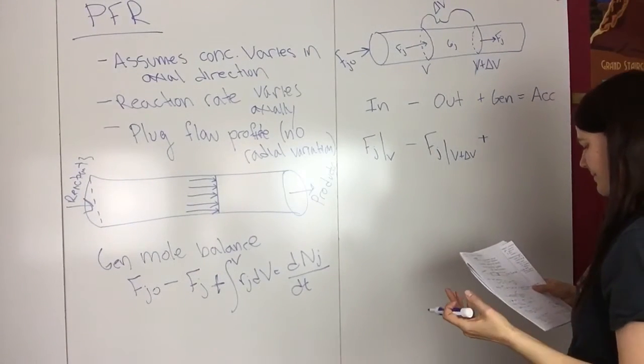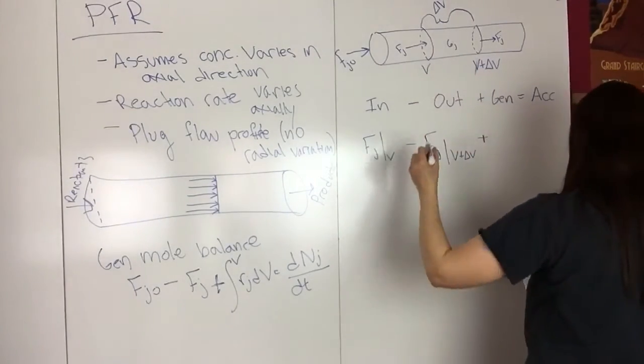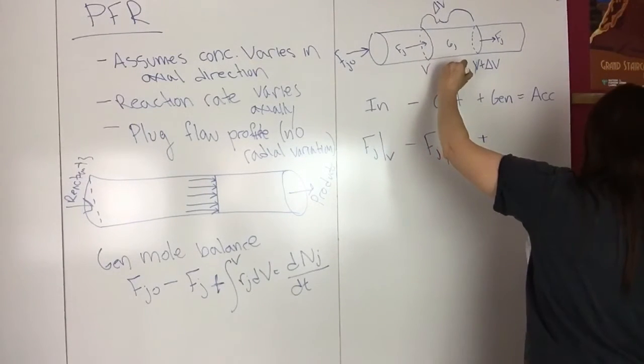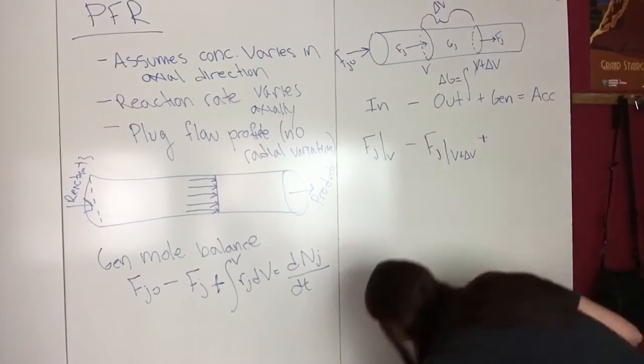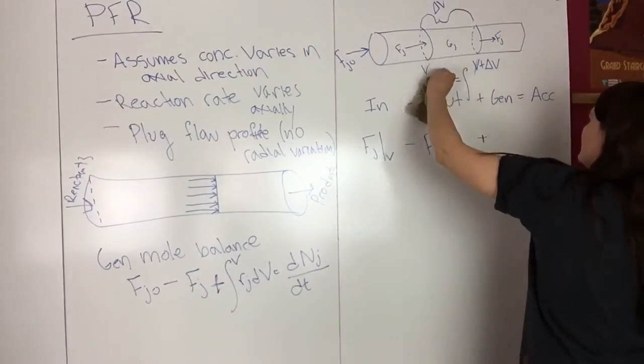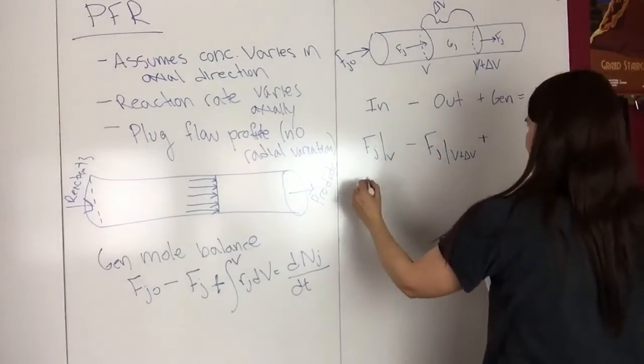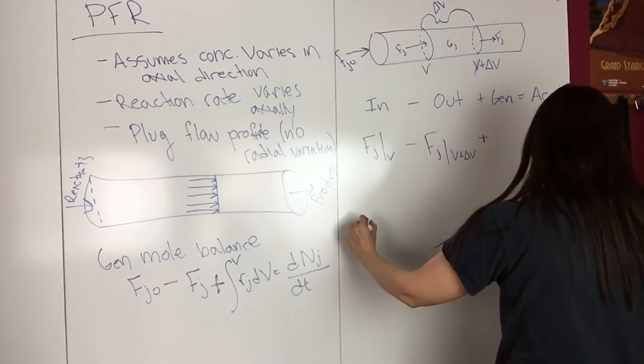Talking about this generation term, we know that delta G is equal to—I'm going to write that somewhere else, I'll write this down here.